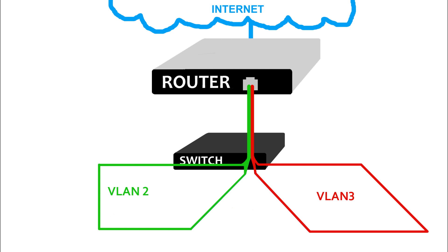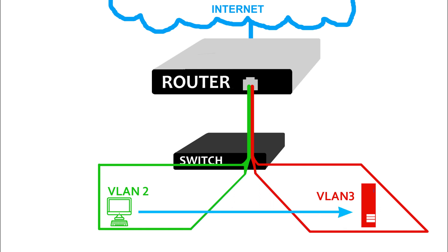So we have our Layer 3 router up here and our Layer 2 switch here. We have VLAN 2 and VLAN 3 configured on the switch. We only want to use one interface on the switch and one corresponding interface on the router to carry routed traffic from one VLAN to the other. We'll put a desktop computer in VLAN 2 and a server over here in VLAN 3. If the desktop in VLAN 2 wants to communicate with the server in VLAN 3, it's going to need a Layer 3 capable device — a router — to convey that traffic across. To solve this, we use router on a stick.